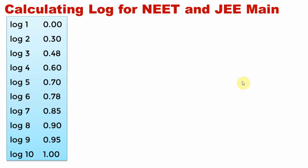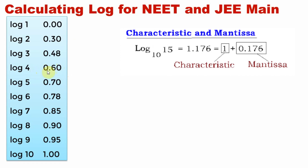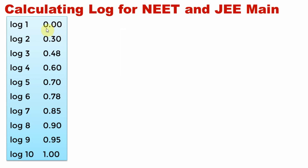Before we go in, I want to clarify a few things when it comes to log. When you do a log of a number, for example log 4, I've approximated it to 0.60. The number before the decimal — in our case zero or one — is called the characteristic, and the numbers after the decimal are called the mantissa. For JE main and NEET you don't need to remember the names, but one thing you want to know is the significant figures. When you do the log of any number, the digits after the decimal point represent the significant figures. For example, log 6 is 0.78 — only two significant figures.